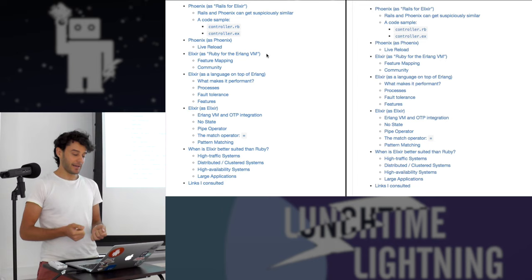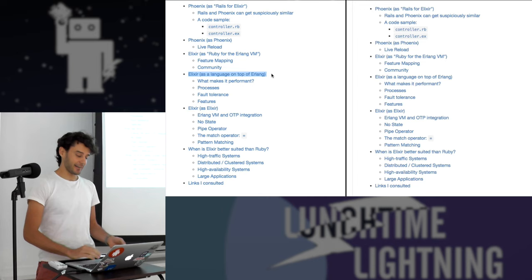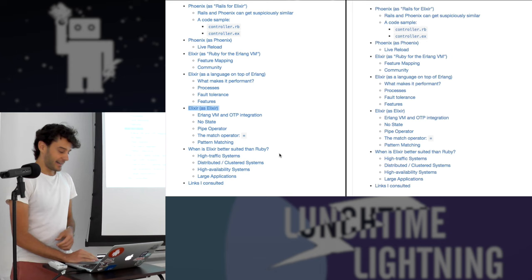First, how Elixir is similar to Ruby, but then how Elixir is different. First, because it sits on top of Erlang, so we need to talk about Erlang, and then because Elixir is Elixir and it's something other than Erlang.